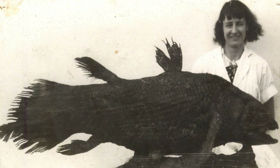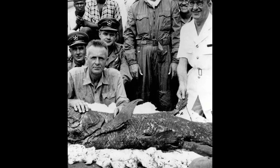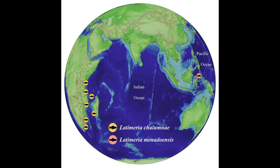The fish was shown to museum curator Marjorie Courtney-Latimer, who immediately recognized its importance. She quickly contacted South African ichthyologist James Leonard Brierley Smith, who confirmed the identity of the fish. In Marjorie's honor, Smith named the extant genus Latimeria, of which there are two species: the West Indian coelacanth, L. chalumnae, and the Indonesian coelacanth, L. menadoensis.